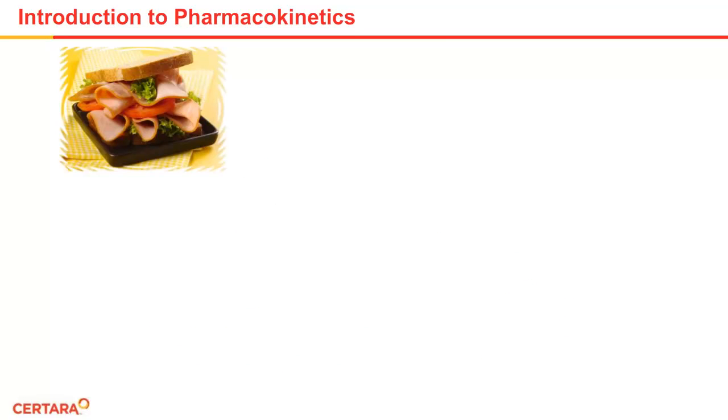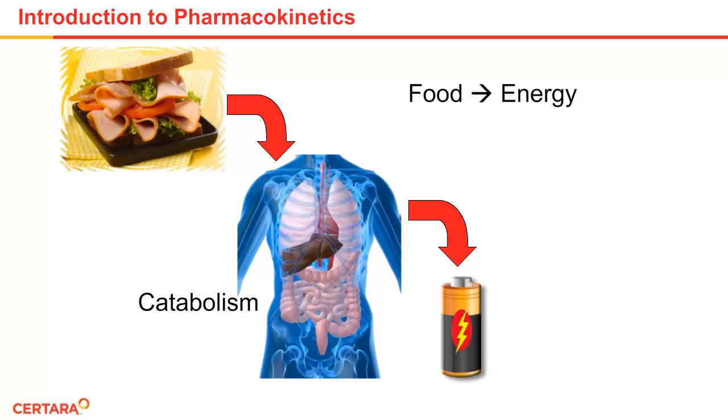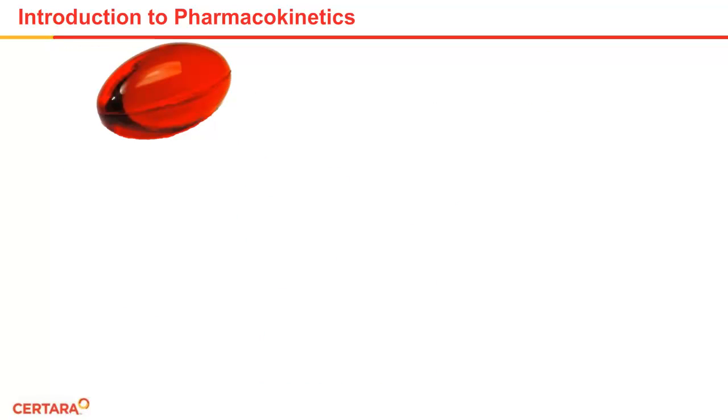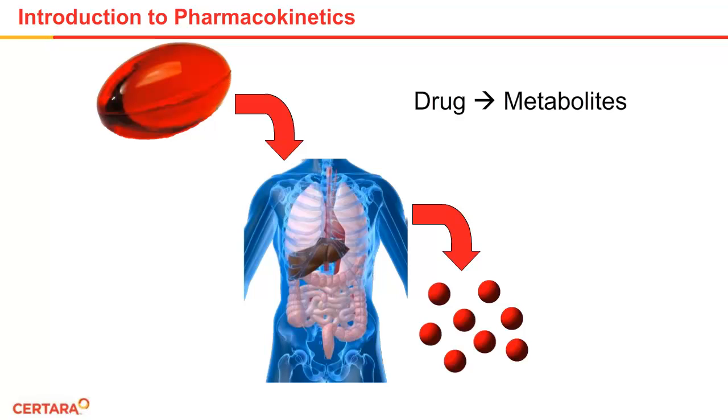If you eat a sandwich, it goes into your body, and then the body does something called metabolizing the food, and it turns it into energy. The process from food to energy is called catabolism. Like food, the drug goes into your body as well, but it does something slightly different. It gets broken down into little pieces that your body gets rid of. These pieces are called metabolites.